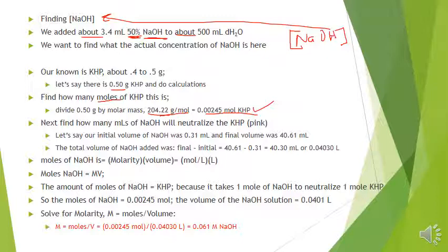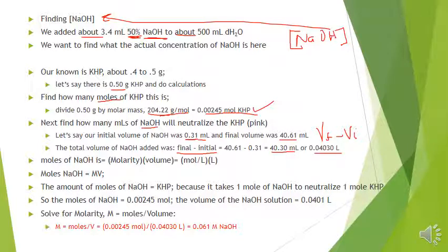Next, I did the experiment — I added the NaOH to the KHP until it turned pink. In my example, the burette started at 0.31 mL and after it turned pink read 40.61 mL. To find the total volume added, take final volume minus initial volume: 40.61 minus 0.31 equals 40.30 milliliters. Convert to liters by dividing by 1000, since molarity is in moles per liter.